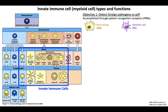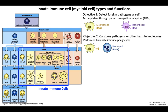Objective number one is to detect foreign pathogens and distinguish them from self-molecules. This is accomplished through pattern recognition receptors, which are most highly expressed by macrophages — a phagocytic type of myeloid cell — as well as dendritic cells, commonly abbreviated as DCs. Objective number two is to consume pathogens or other harmful molecules, primarily performed by professional phagocytes: macrophages and neutrophils, sometimes abbreviated as PMNs, which stands for polymorphonuclear leukocytes. Notably, DCs will also phagocytose debris, but typically in the context of antigen presentation rather than consuming massive amounts of extracellular debris.